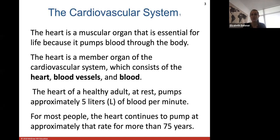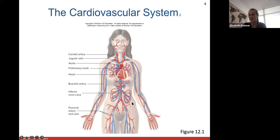The heart is a member of the cardiovascular system, which includes the heart, blood vessels, arteries, veins, and blood. In a healthy adult at rest, your heart pumps about five liters of blood per minute - think about five of those one-liter soda bottles every minute. The heart continues to pump at approximately that rate for about 75 years, though it can slow down a little depending on how well you take care of yourself.